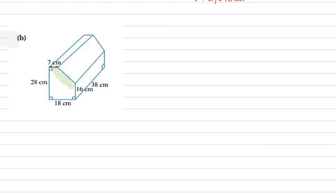Here we have another prism whose volume we need to calculate. First identify the cross section — the highlighted face. This shape needs to be broken into two parts: a rectangle at the bottom with dimensions 18 by 16, and a trapezium above it. The height of the trapezium is found by subtracting: 28 minus 16 equals 12.